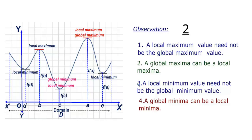We will see this also in the graph. We have three local minimum values; however, these two are not the global minimum values. But this one is both a local minimum as well as a global minimum. So a global minimum can be a local minimum, but a local minimum need not be a global minimum. Hence, we have discussed, understood, and defined the global maximum and global minimum in this lecture. Thank you so much for joining us.